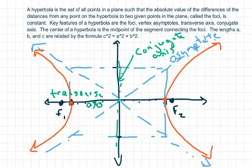The center is the midpoint of the segment connecting the foci. Last time with the ellipse the formula was a squared minus b squared, but now it's c squared — your c is your foci part — so it's going to be a squared plus b squared. You also have slopes to your asymptotes.